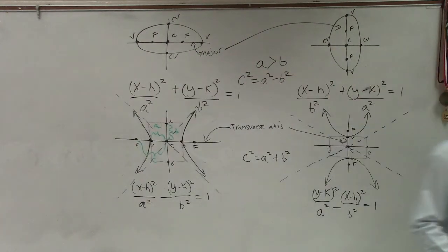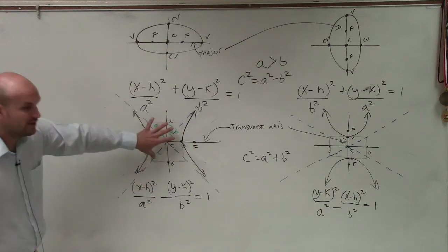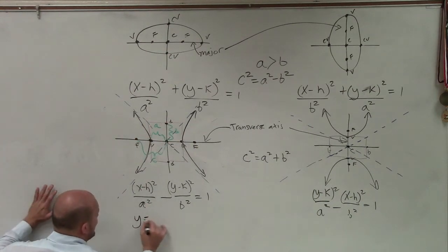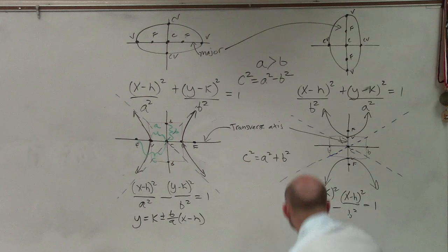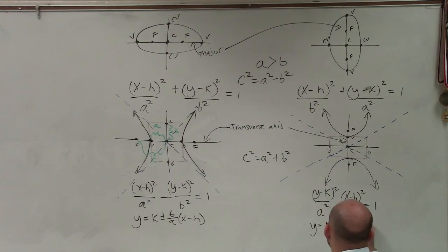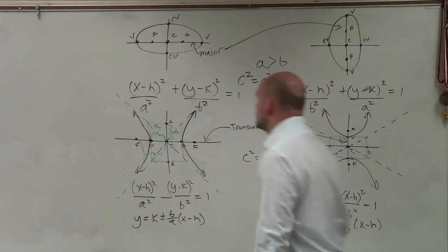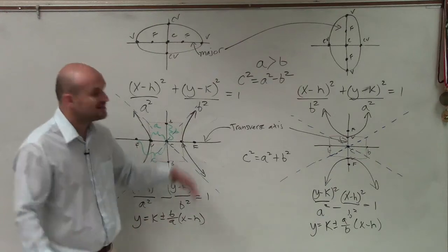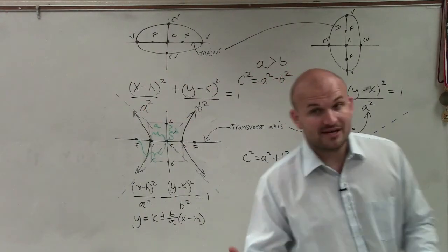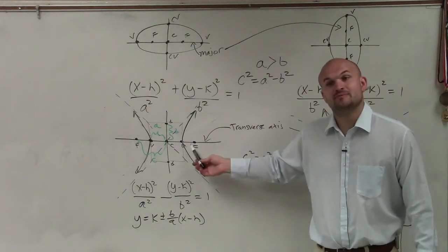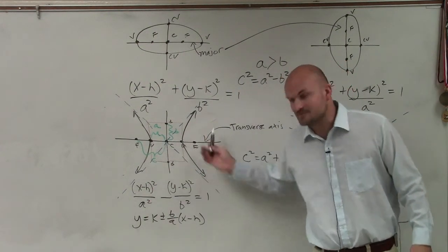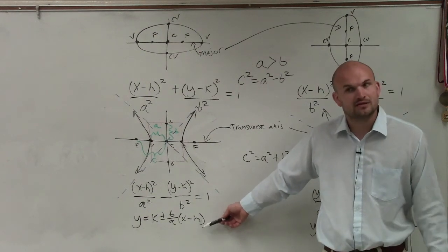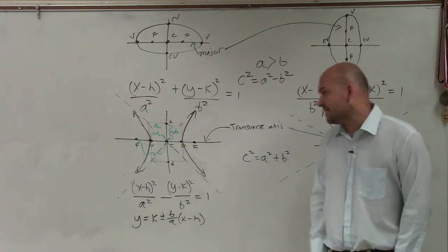The formula for horizontal is y equals k plus or minus b over a times x minus h. And the formula for the vertical asymptote is y equals k plus or minus a over b times x minus h. So the differences from a hyperbola to an ellipse: it's all the same as far as center, foci, and vertices. The only difference is your foci are going to be outside of your vertices. We are going to have to find the value of b when graphing to apply the asymptotes, or you can use the equation in slope-intercept form to graph the asymptotes.